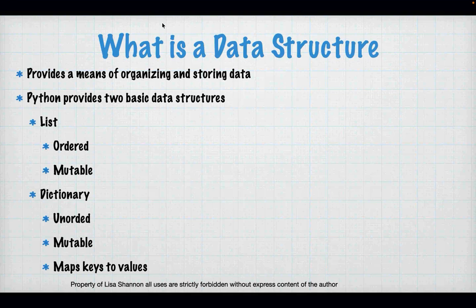A dictionary is a different data structure than a list. A dictionary is unordered, meaning it does not have an index value. It is mutable, which means I can change it in place. What a dictionary does is it maps keys to values. When you look at NoSQL databases like MongoDB, MongoDB is just a really big dictionary in a file. The concept of a dictionary is relatively simple, but the actual application of a dictionary can be pretty impressive. So that's what we're learning about tonight — lists and dictionaries.